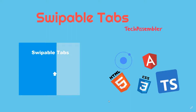Welcome to the Ionic assembler tutorial. In this tutorial we will be implementing swappable tabs using ion-slides and ion-segment. If you don't know the basics of ion-slides or ion-segment, you can watch my previous videos on those.